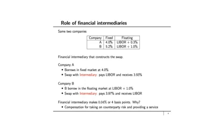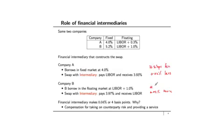Here's how these swaps get set up with the same two companies, A and B, and a financial intermediary. Company A borrows in the fixed rate market at 4%, swaps with the intermediary, pays LIBOR, and receives 3.93%. Company B borrows in the floating rate market at LIBOR plus 1%, constructs a swap with the intermediary, receives LIBOR, and pays 3.97% — two basis points more. The financial intermediary in the middle makes 0.04%: it receives two basis points from Company A and two basis points from Company B.